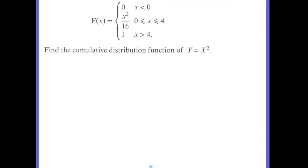So we have our function. We are given the CDF of x and we are given the function y equals x squared. So to find the CDF of y, we first of all find the inverse of h here. So we have y equals x squared, and the inverse will just be to solve for x, so x will be equal to the square root of y.